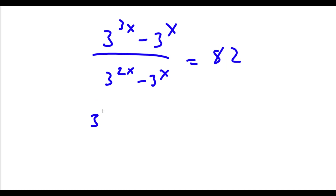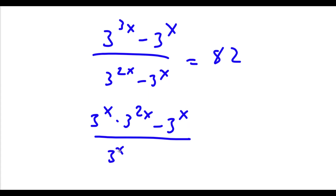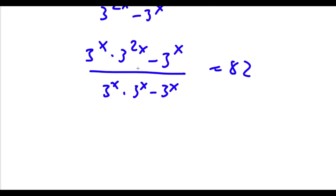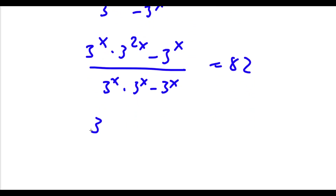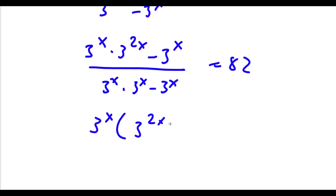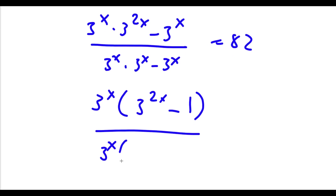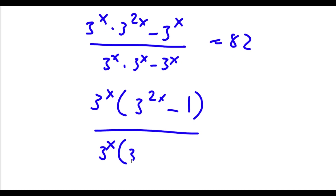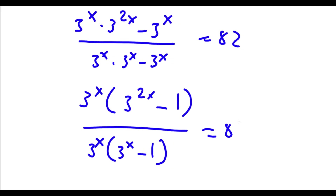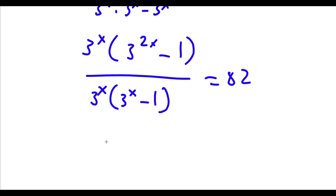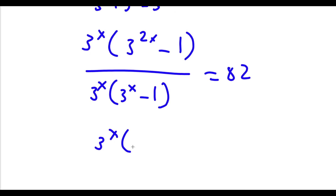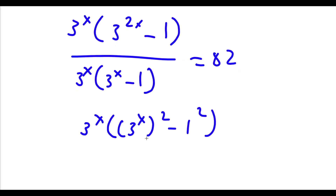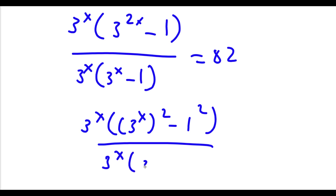Now 3 to the power of 3x is the same thing as 3 to the power of x times 3 to the power of 2x. So I have 3 to the power of x times 3 to the power of 2x minus 3 to the power of x over 3 to the power of x times 3 to the power of x minus 3 to the power of x, equal to 82. Factoring out 3 to the power of x in the numerator gives 3 to the power of x times 3 to the power of 2x minus 1. Factoring out 3 to the power of x in the denominator gives 3 to the power of x times 3 to the power of x minus 1, equal to 82. Now 3 to the power of x times 3 to the power of 2x is the same as 3 to the power of x squared, and 1 is 1 squared.